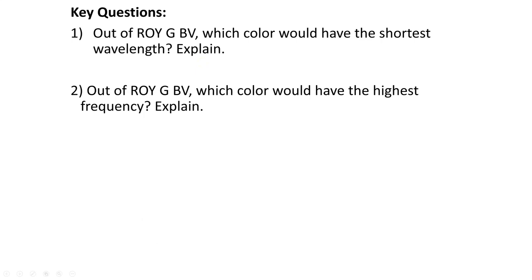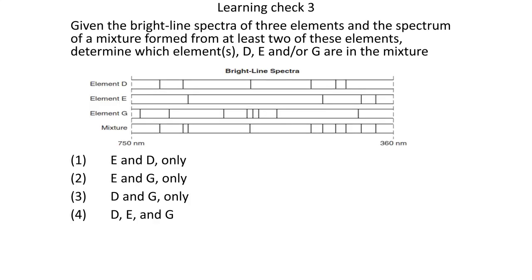Out of ROY G BIV, which color has the shortest wavelength? The shortest wavelength has the highest energy — that would be violet. Out of ROY G BIV, which color has the highest frequency? Still violet, because there's an inverse relationship between wavelength and frequency. The shorter the wavelength, the higher the frequency, and vice versa.